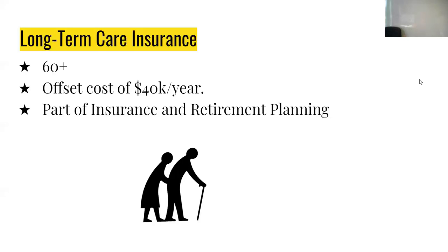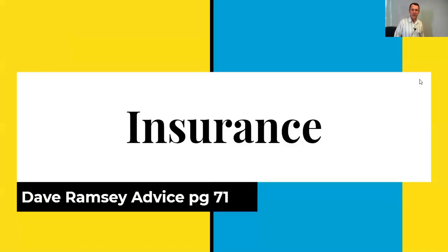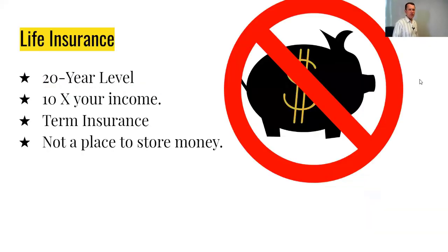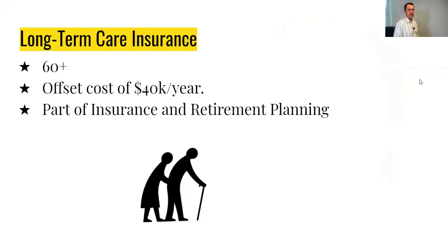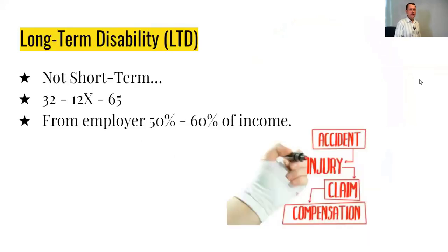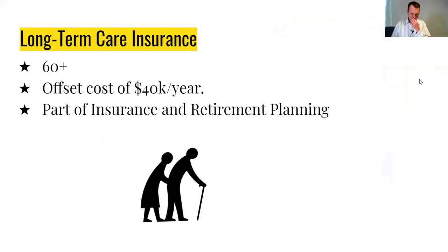So we have five types of insurance: auto and home, life insurance, long-term disability, health insurance, and long-term care. All of this is on page 71 in your Total Money Makeover. If you want a solid insurance section that won't get a lot of red marks when I grade it, have all five of those in there with your current situation and your future action plan for each one, and you'll be set.